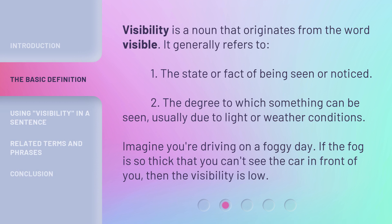Visibility is a noun that originates from the word visible. It generally refers to: one, the state or fact of being seen or noticed; two, the degree to which something can be seen, usually due to light or weather conditions.